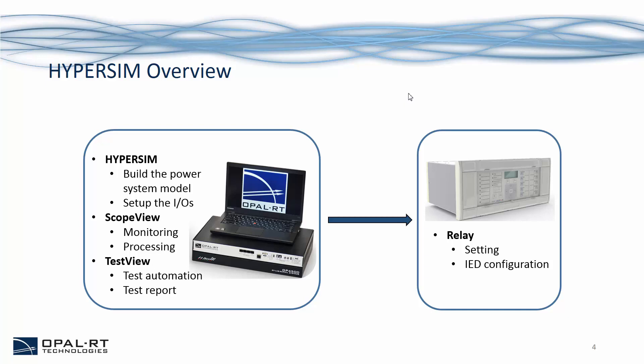Hypersim comes with two very powerful tools: ScopeView and TaskView. During the real-time simulation, we can use ScopeView to monitor the real-time simulation data, and it can also help us do some data processing. When testing a protective relay, you will need to generate a great number of different testing scenarios. In this case, TaskView can help you automate the test sequence and generate a test report automatically.